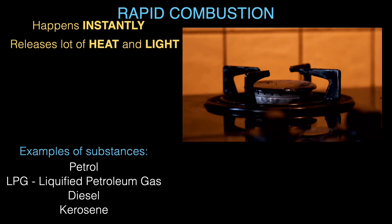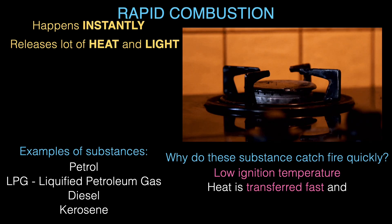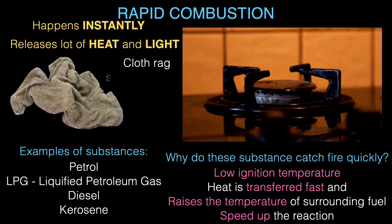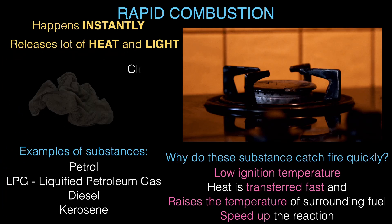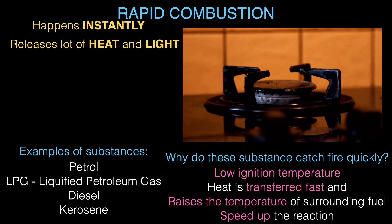Why do certain substances catch fire so quickly? It's because they have a relatively low ignition temperature. And once the reaction starts, the heat is transferred fast and raises the temperature of the surrounding fuel, speeding up or accelerating the combustion process. For example, a piece of cloth soaked in petrol — if you bring a matchstick near it, it burns right away, because the ignition temperature is lowered by the presence of petrol and heat transfer is super fast, accelerating the combustion.